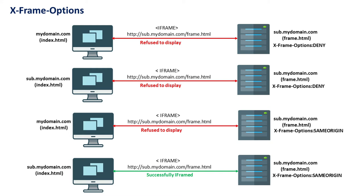Here is the problem with X-Frame-Options: it only supports two options — either completely deny or allow from same-origin. Since the allow-from directive is not supported by modern browsers, you cannot specify the origin URL that is allowed to iframe the page. Even on old browsers you cannot combine deny and same-origin with allow-from. Also, allow-from supports only a single origin URL and cannot be a wildcard.